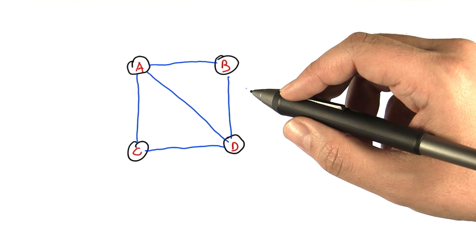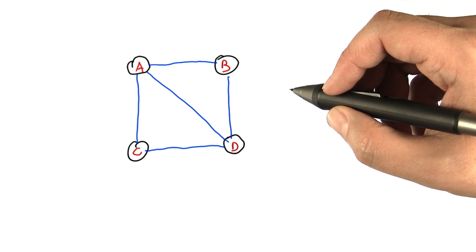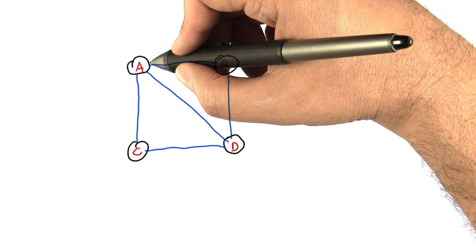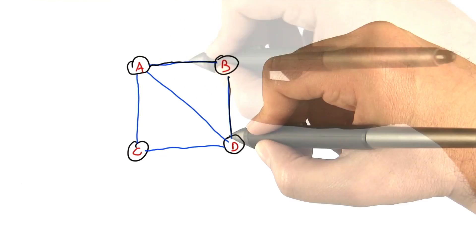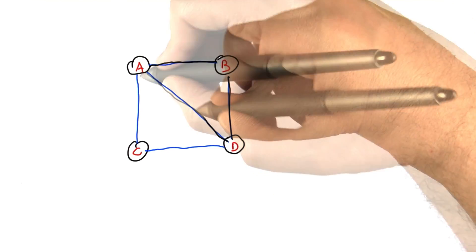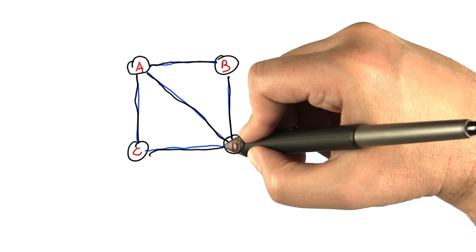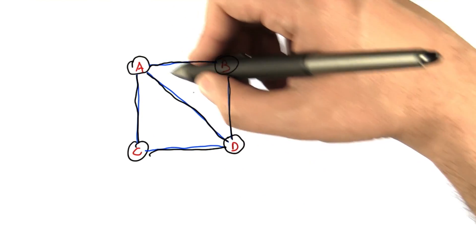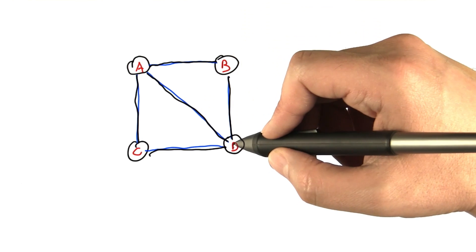In a graph we can talk about something called an Eulerian path. This is a path that starts off at some node in the graph, let's say A in this case, and it moves along the edges from node to node, hitting every edge exactly once and then ending at some node of the graph. So in this case we have an Eulerian path that started at A and ended with D.